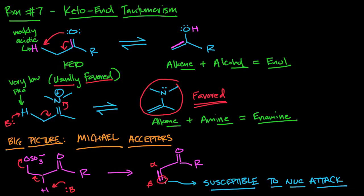So keto-enol tautomerism - we're moving atoms and electrons. The big picture is the keto form, usually favored, can be used to generate Michael acceptors which are susceptible to nucleophilic attack. You could favor the enol form if the resulting structure has something particularly stable about it, like intramolecular hydrogen bonding or aromaticity.